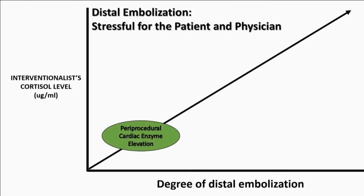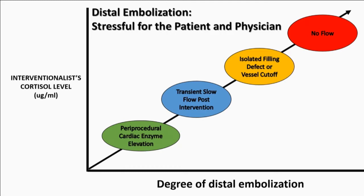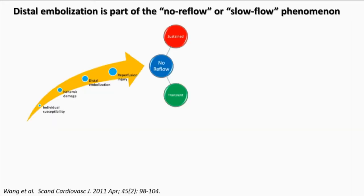Starting with relatively benign — nowadays periprocedural asymptomatic cardiac enzyme elevation — to transient slow flow during the intervention, to an isolated filling defect or vessel cutoff, and in the worst-case scenario, no flow at all. No flow is a complex mechanism; distal embolization is only one part of the entire no-flow or slow-flow phenomenon. It involves individual susceptibility, ischemic damage, reperfusion injury, and can be sustained or transient.